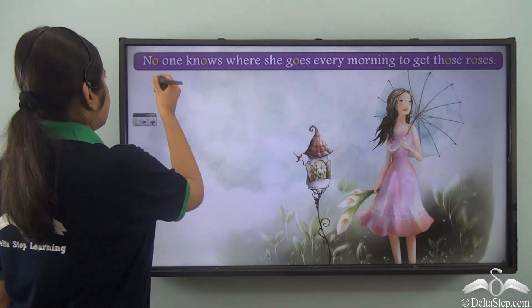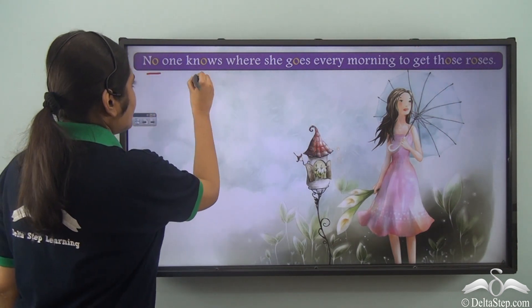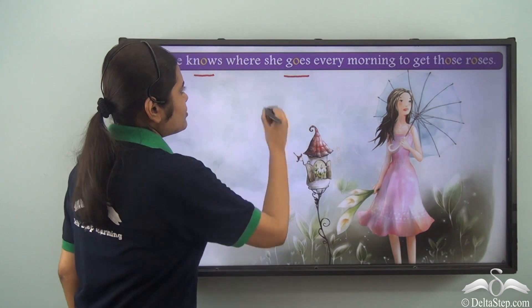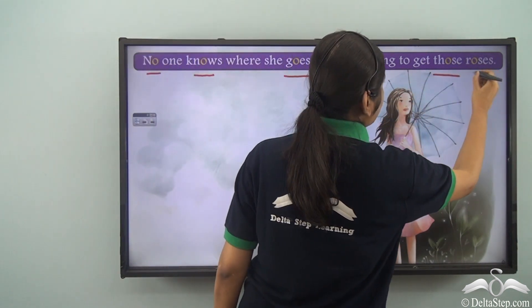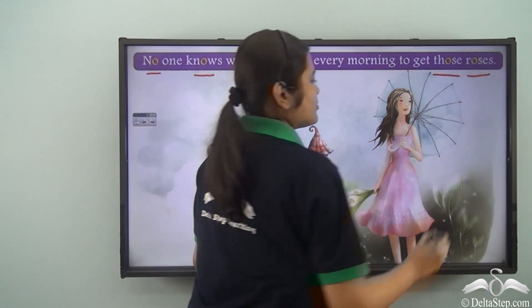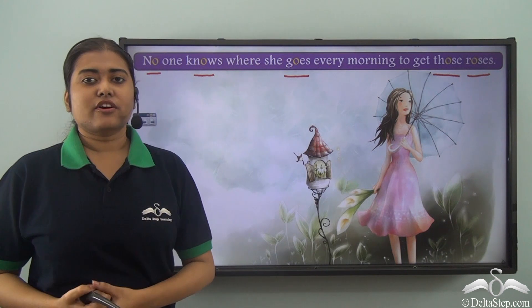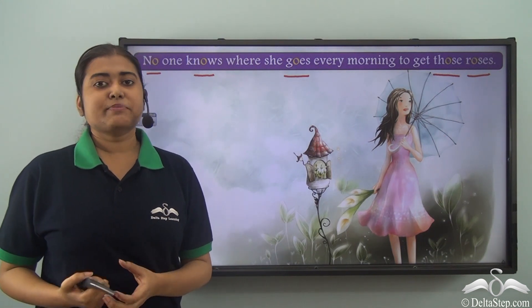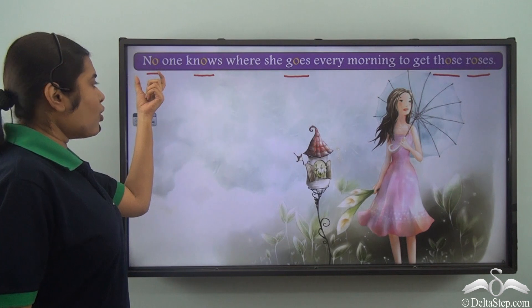Look at the words: no, knows, goes, those, roses. In each of these, the vowel sound O is being repeated.